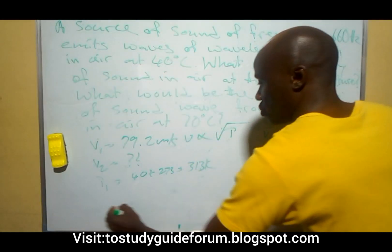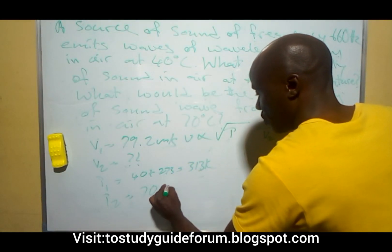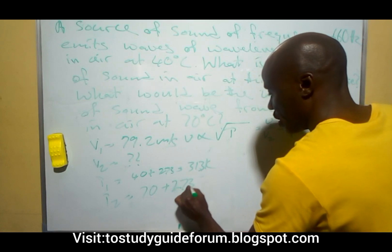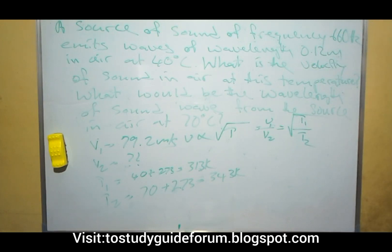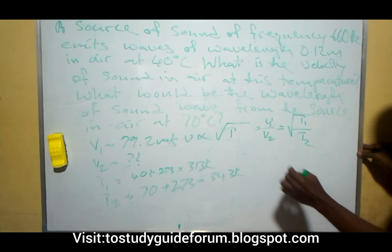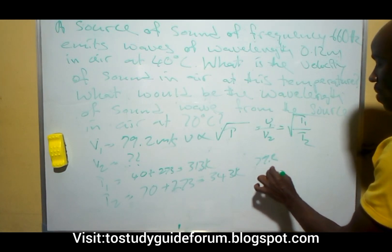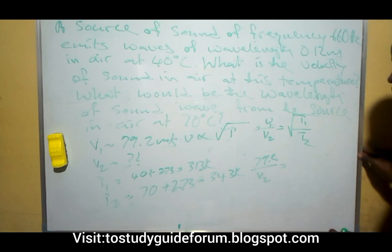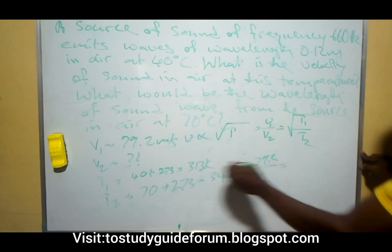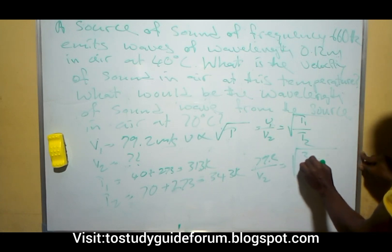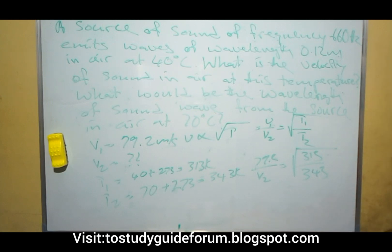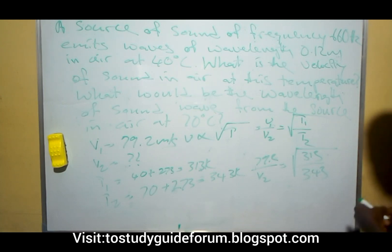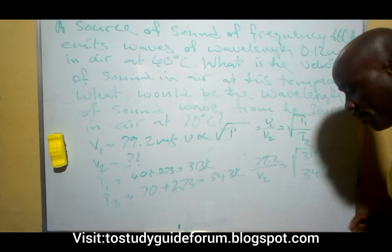And T2 equals 70 plus 273, which gives us 343 Kelvin. Now we substitute: V1 over V2, that is 79.2 over V2, equals the square root of 313 over 343.